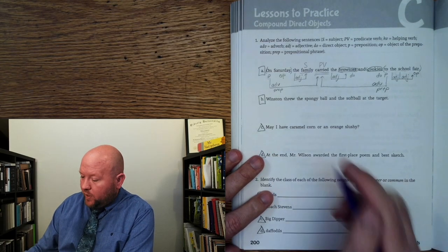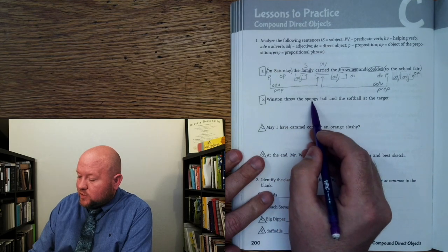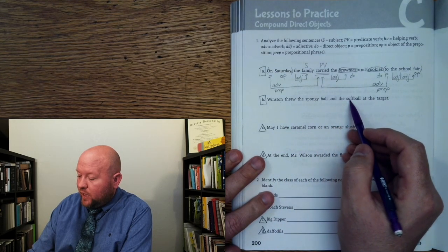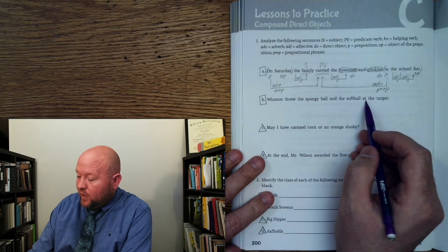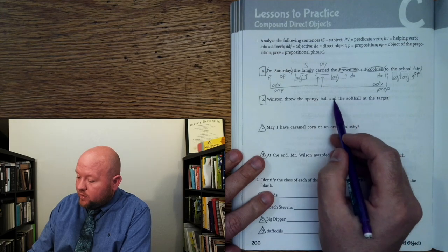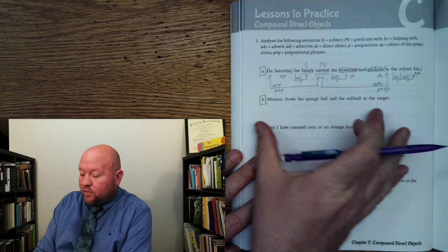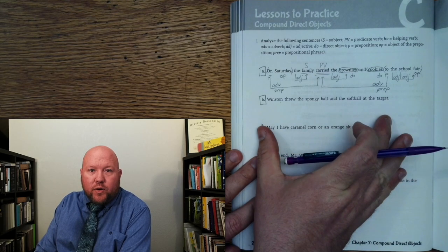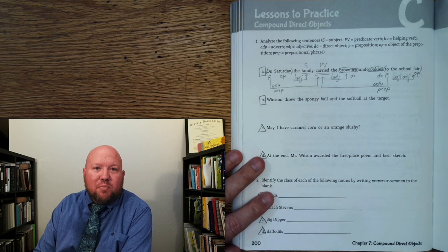Next we have: Winston threw the spongy ball at the softball and the softball at the target. Go ahead and do this sentence independently on your own, and then when you're ready, come back and we'll review it together. Go ahead and pause the video now.